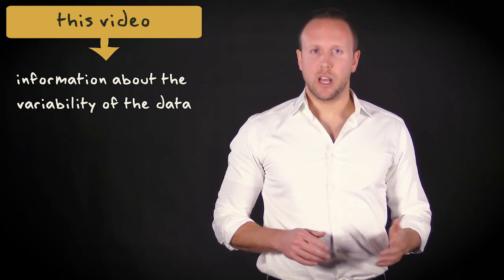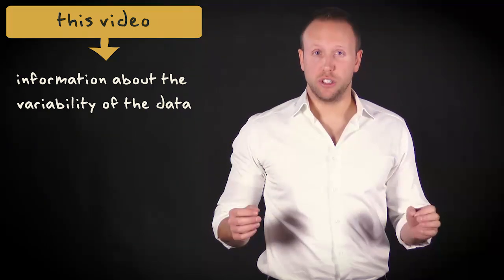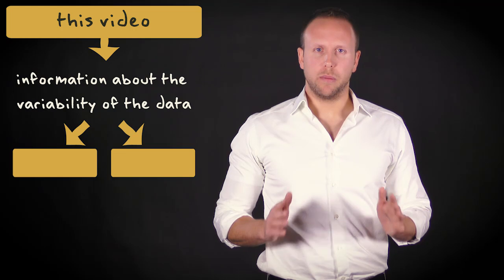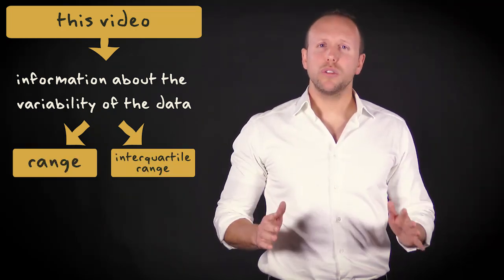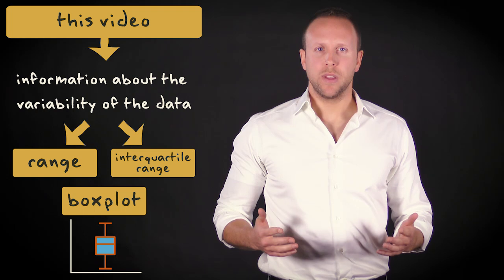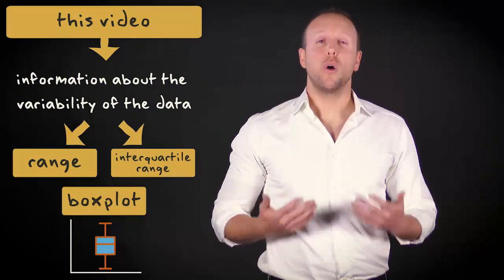In this video, I will show you that we also need to have information about the variability, or dispersion, of the data. I will discuss two measures of variability, the range and the interquartile range. I will also discuss the so-called box plot. It's a very useful graph that gives a good indication of how the values in the distribution are spread out.